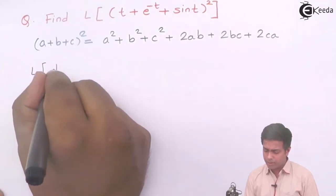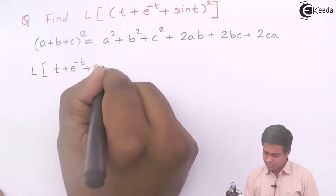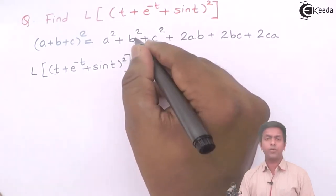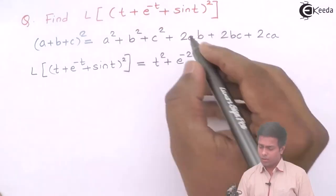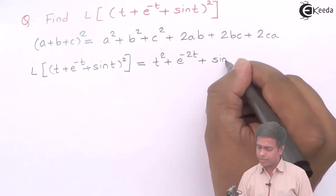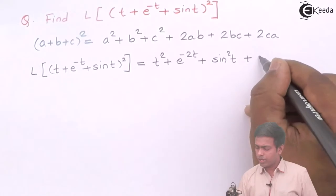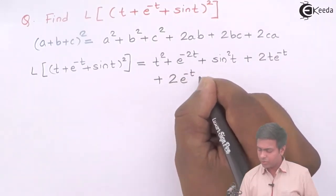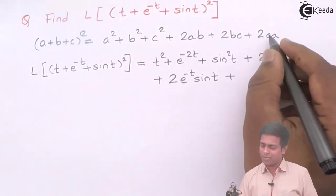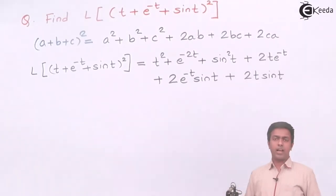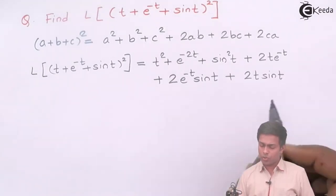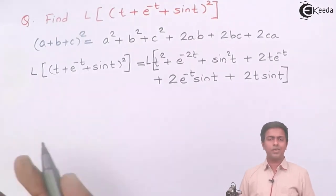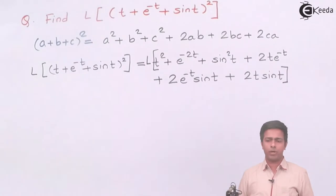So the Laplace of (t + e^(-t) + sin t)² expands to: a² gives t², b² gives e^(-2t), c² gives sin²t, 2ab gives 2·t·e^(-t), 2bc gives 2·e^(-t)·sin t, and 2ca gives 2·t·sin t. To get the Laplace of this, we find the Laplace of this whole expanded function.